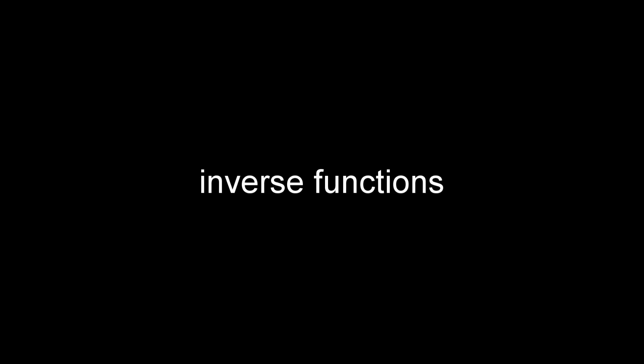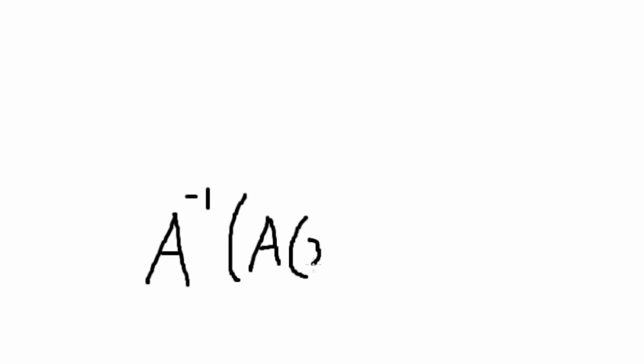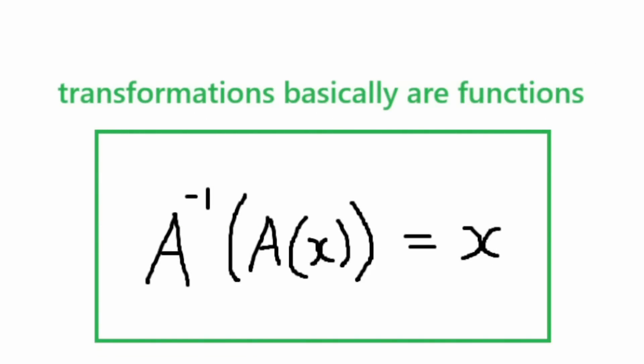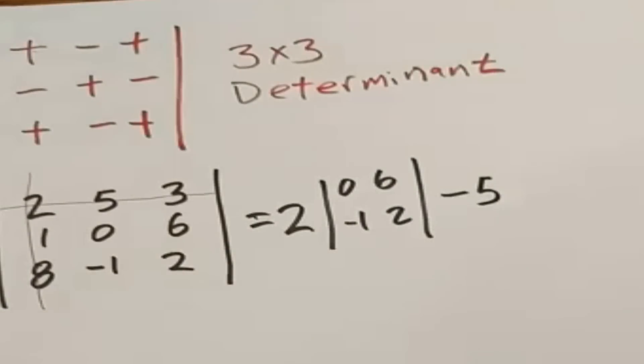So, we know inverse functions eliminate the effect that functions have on the input. It's literally the same for transformations, because transformations basically are functions, but with multiple inputs. There is an important thing to know about matrices which we haven't talked about yet, and that is the determinant.